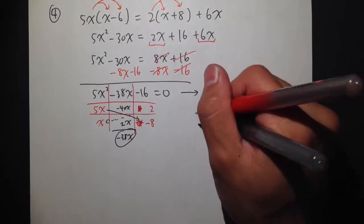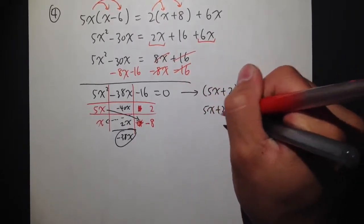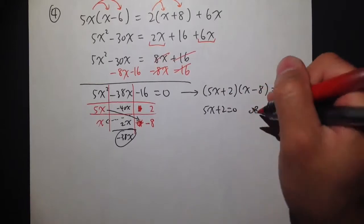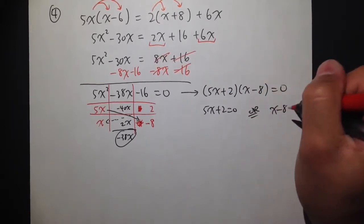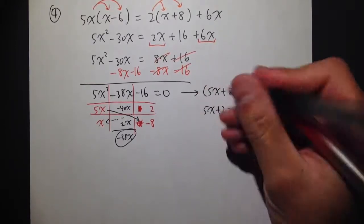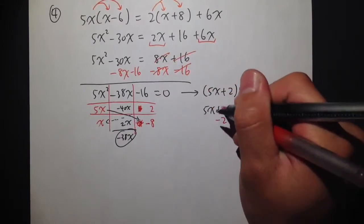The first parenthesis, 5x plus 2 equals to 0. Or in another case, x minus 8 equals to 0. For this one, I will minus 2 on both sides. Cancel this.